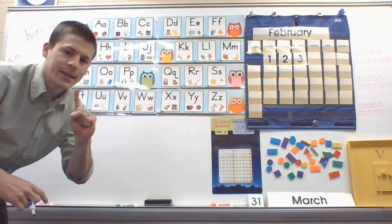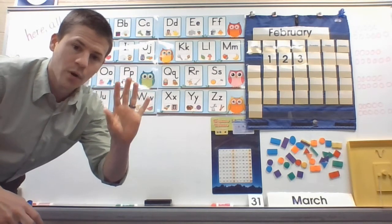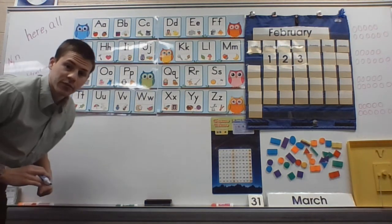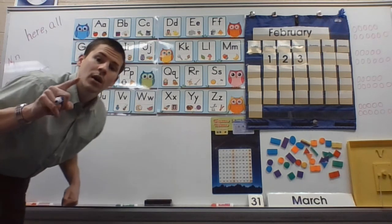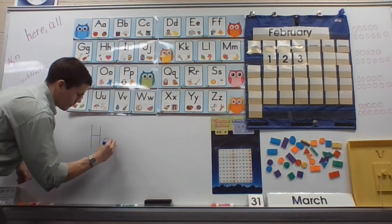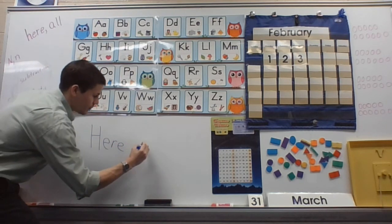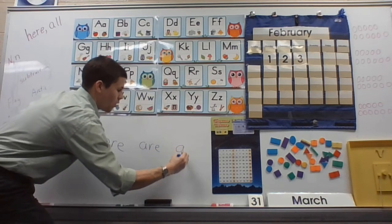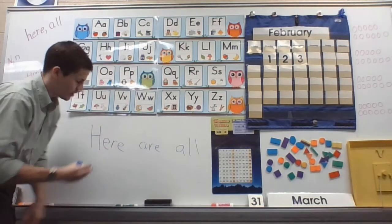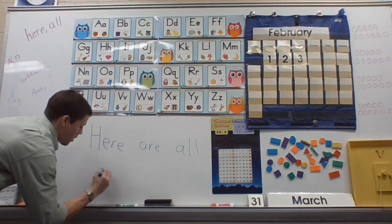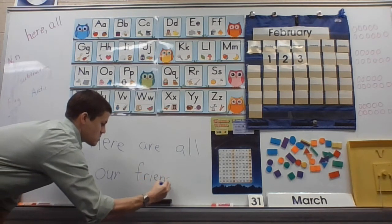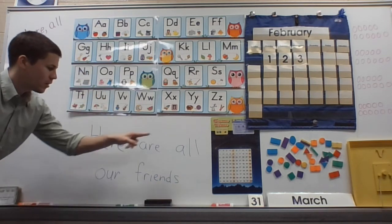I'm going to do one sentence that's going to have both sight words in it. Are you ready? The sentence is, Here are all our friends. Only five words. I think we can write this quickly. Now, here is our first word. So, it's going to be a capital H. Here, are you writing this with me? Here are all. Now, I'm such a good writer, I don't even need to do my fingerspaces. I just know that they go there. Here are all. Our. Friends.